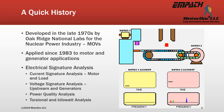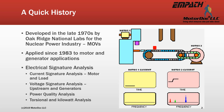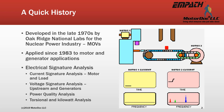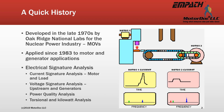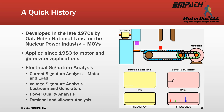Electrical signature analysis involves a collection of both voltage and current data in order to perform analysis on both motors and generators of all types. It was developed by Oak Ridge National Labs for testing motor operated valves in nuclear power plants in the 1970s and entered industry in the early 1980s. M-PATH is the direct descendant of the Oak Ridge system.